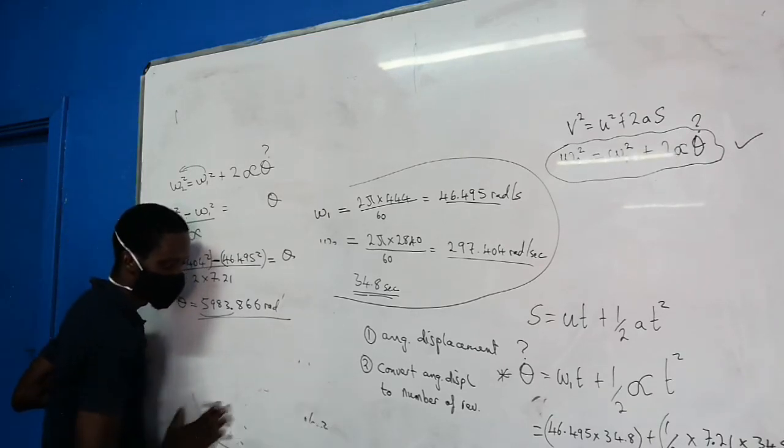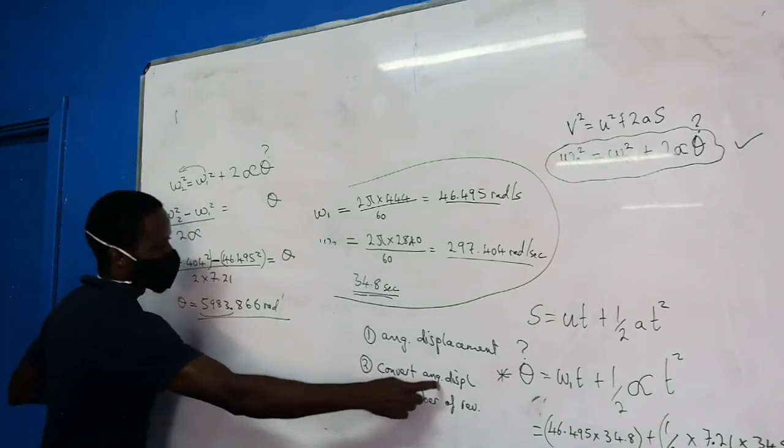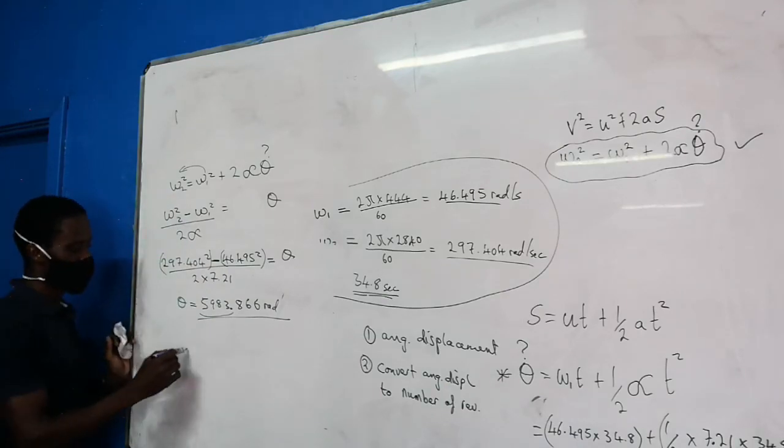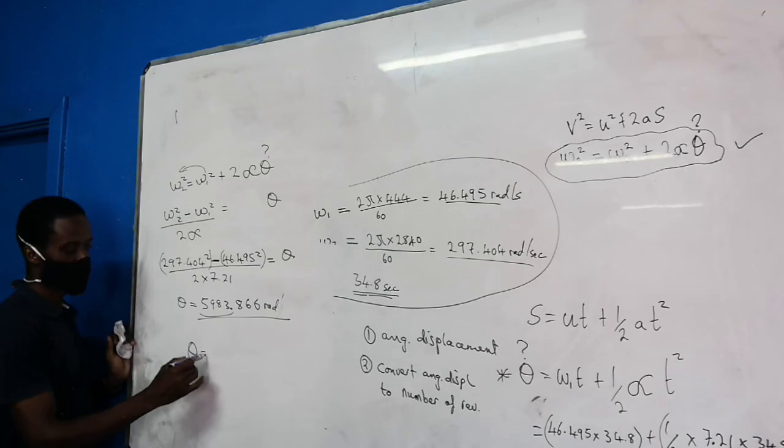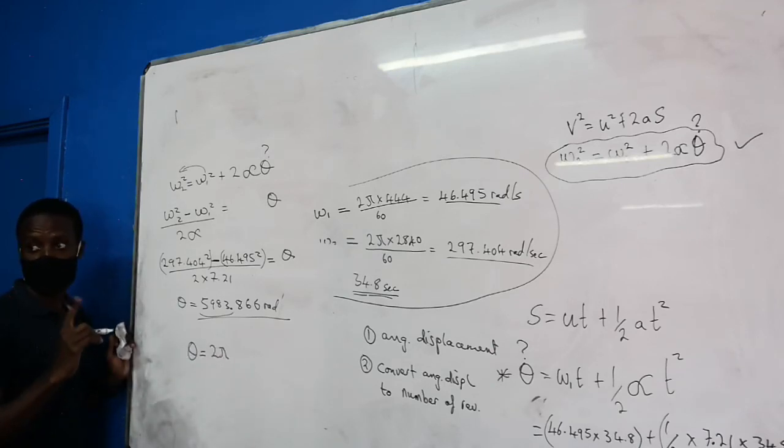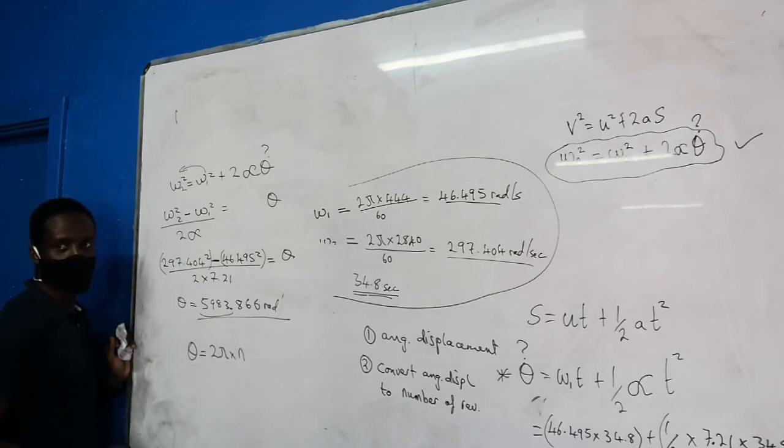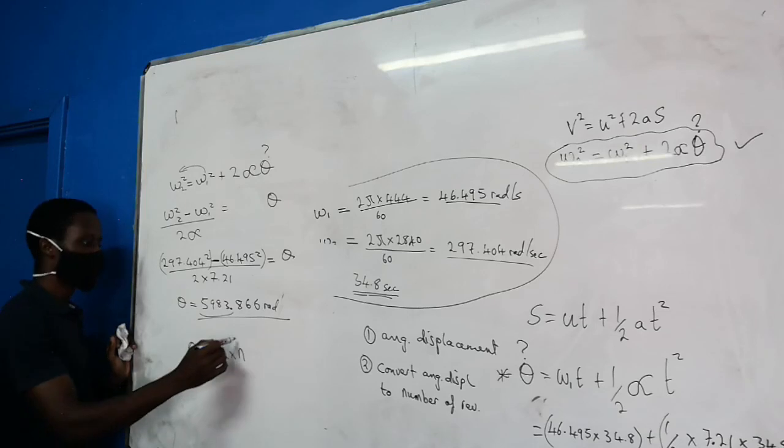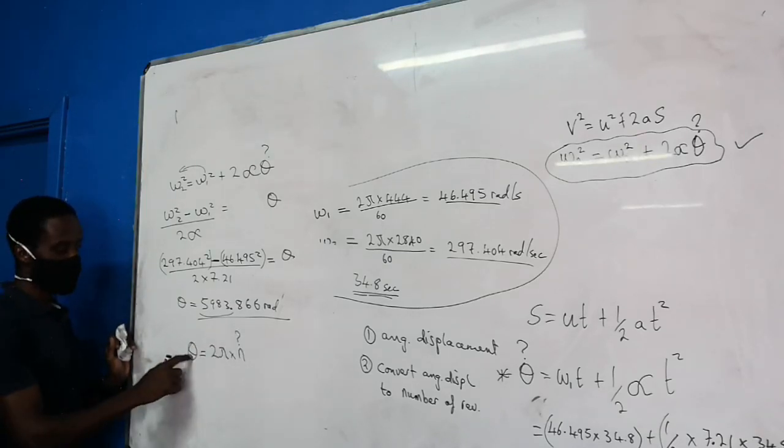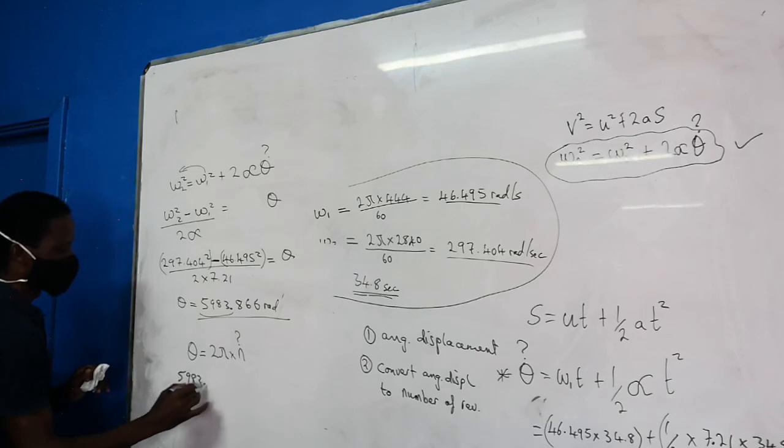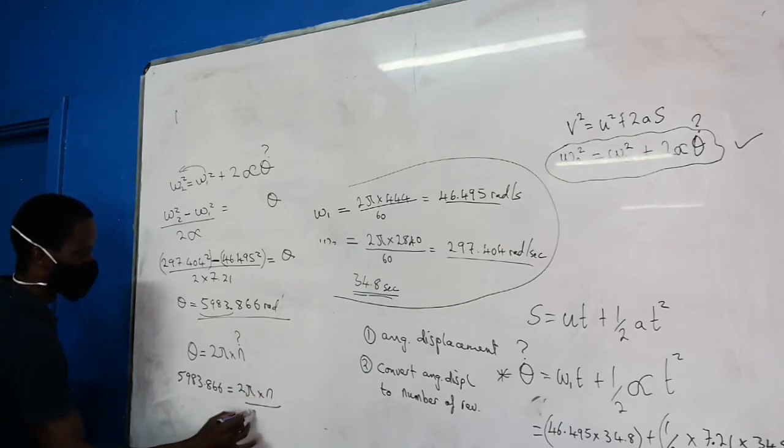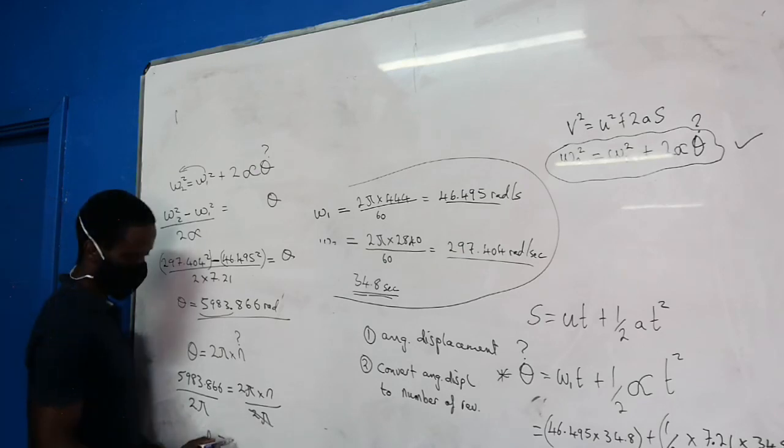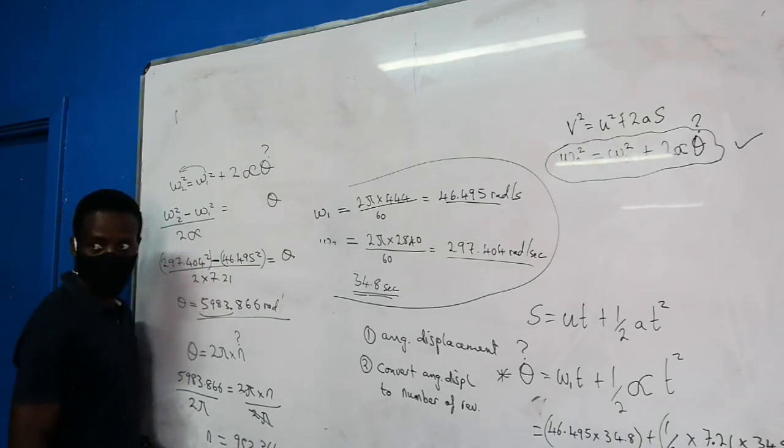Now the final stage, you convert angular displacement to number of revolutions. We said angular displacement is equal to 2π times the number of revolutions that have been made. This is what the question is asking you. We have this value, which is 5,948.8 radians. So N = 5,948.8 divided by 2π, which gives us 946.9 revolutions.